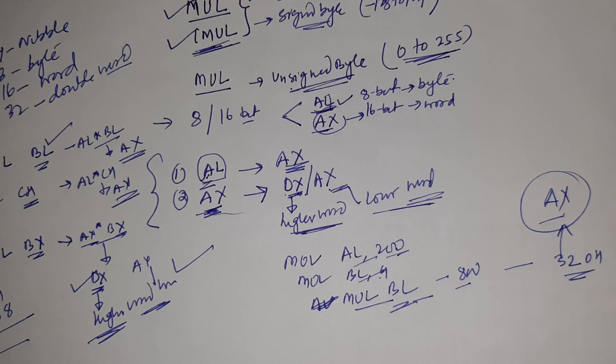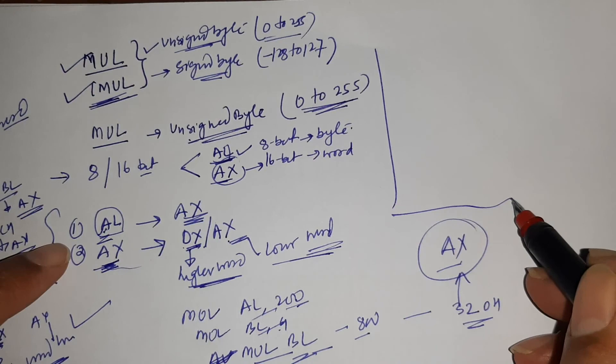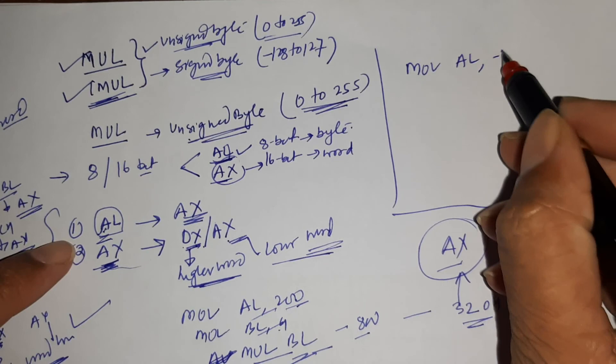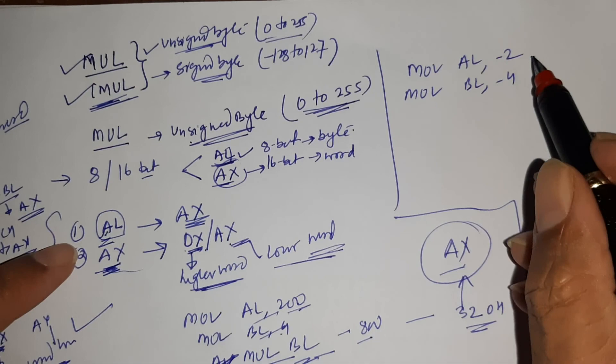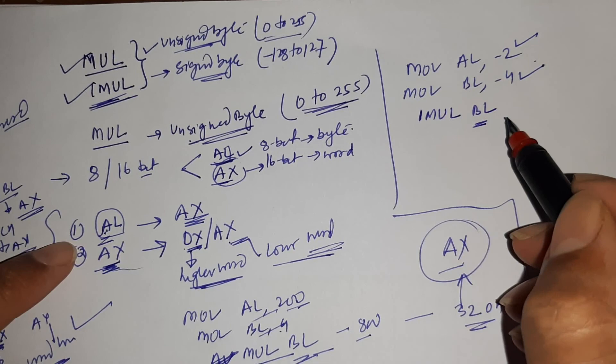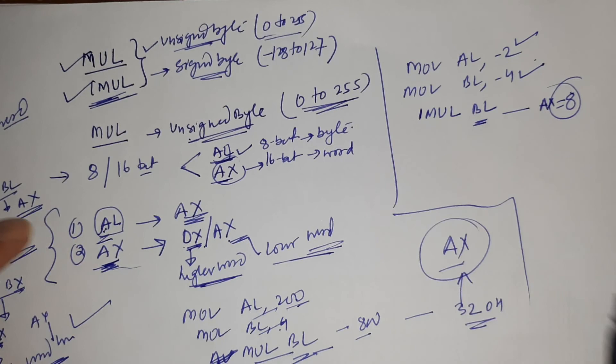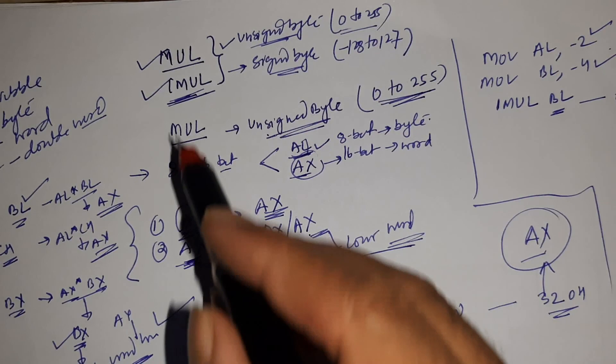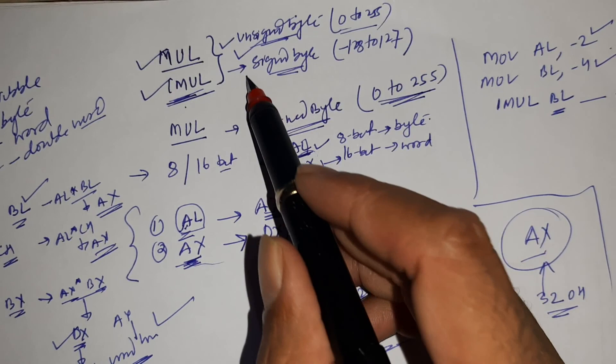For IMUL, consider: MOV AL, -2 and MOV BL, -4. Since these are signed numbers, we use IMUL BL. Negative two multiplied by negative four gives positive eight, so AX will equal 8.